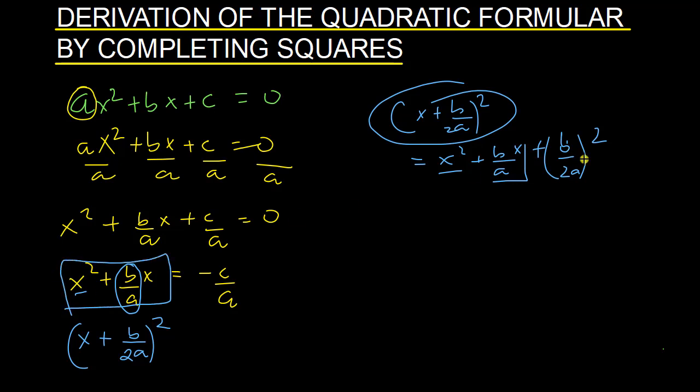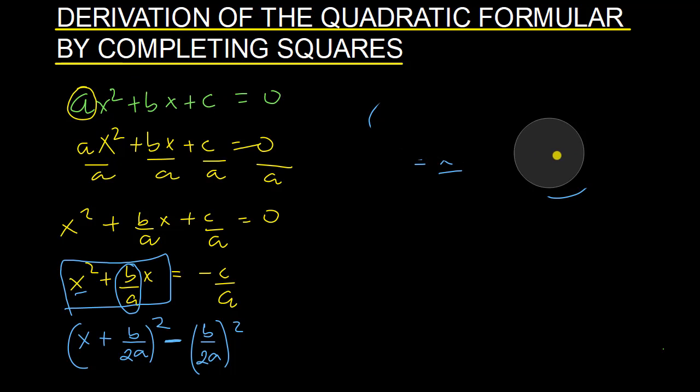But then I have an extra term created. So I've got to subtract off that term here. So I have (b/2a)² because that extra term is created as I expand this. So I've got to subtract that away. That's very important at this step. Then equals -c/a on the other side.